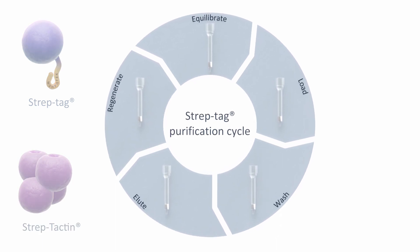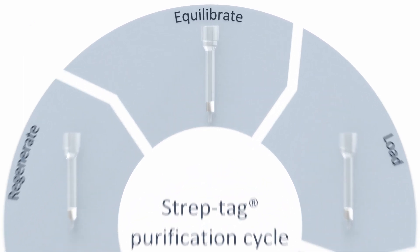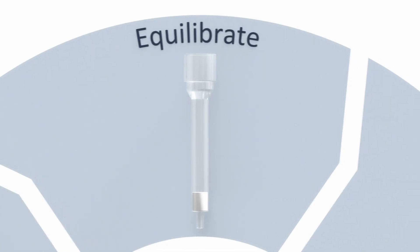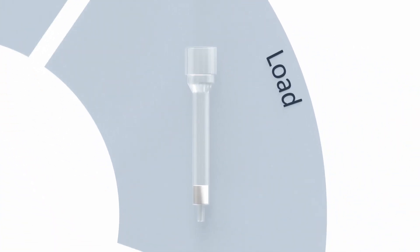The Streptag purification cycle starts with the equilibration of the agarose beads with physiological wash buffer. In a second step, the protein sample is applied to the agarose beads and only the Streptag fusion proteins will bind.